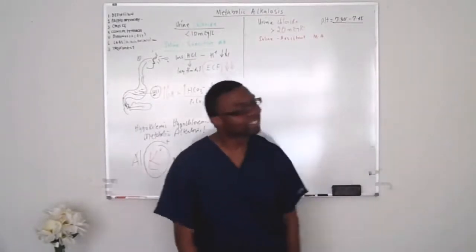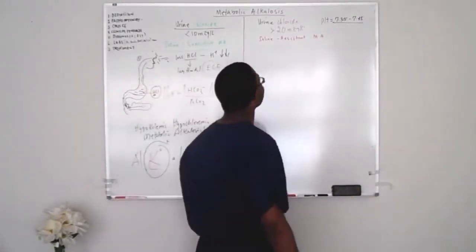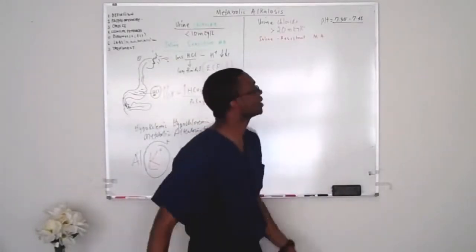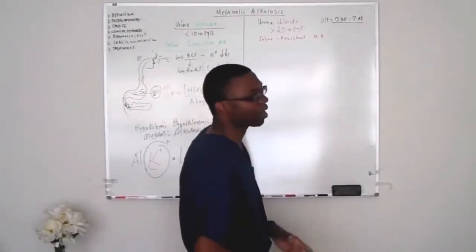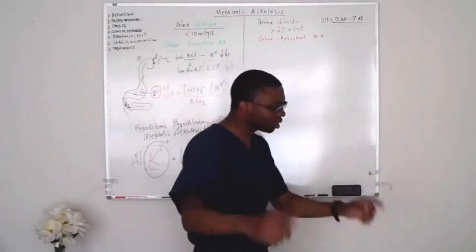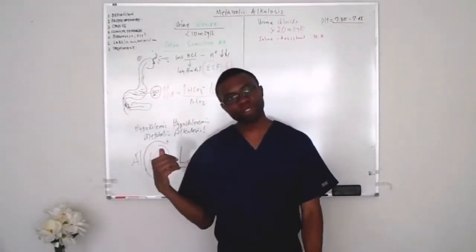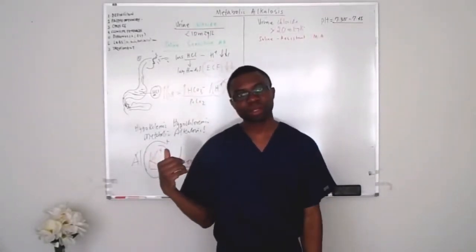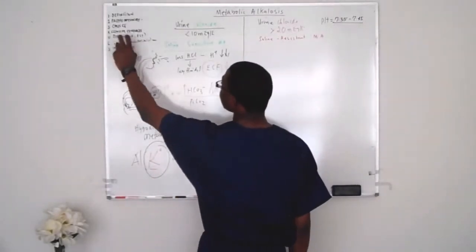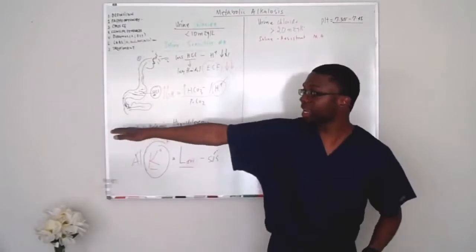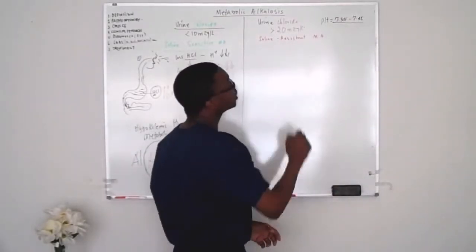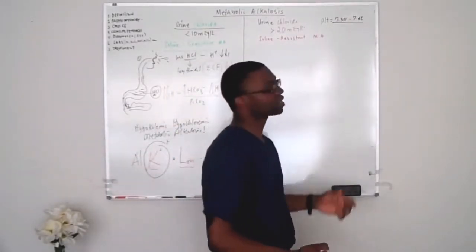Now let's go to the other side — urine chloride very high. What is going to cause the urine chloride to be very high? We're talking about saline-resistant. Urine chloride is extremely high — it doesn't respond to saline. What would cause this?